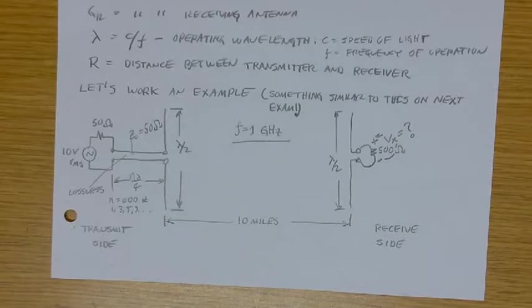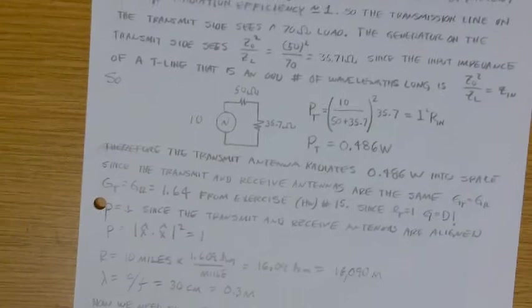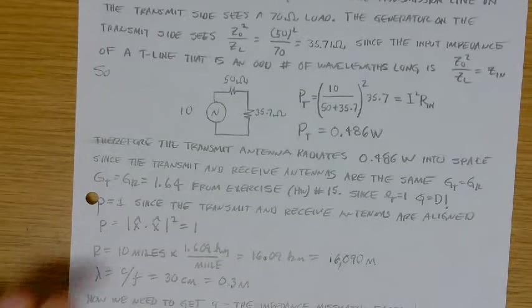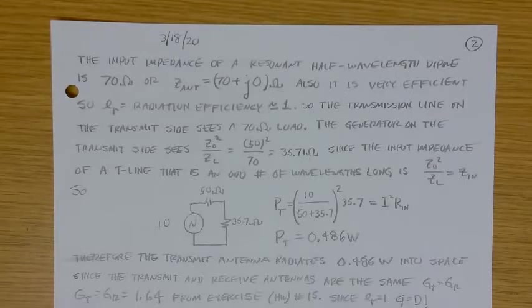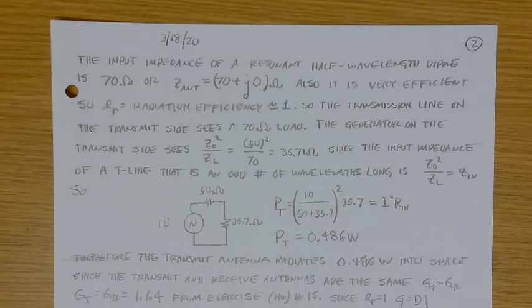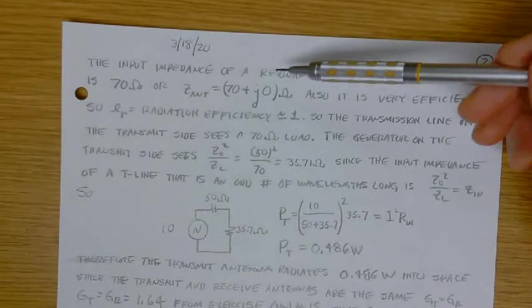Okay, so 10 miles away we have a receive antenna. It's also an identical dipole, resonant dipole. And it's terminated in 500 ohms. Ideally, we'd like to terminate it in 70 ohms, because that's the internal impedance of this receive antenna. This receive antenna is modeled as some open circuit antenna voltage in series with the antenna impedance. And the receive antenna impedance, just like over here, is 70 ohms.